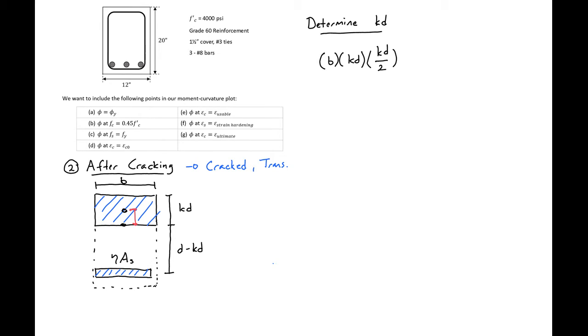Then set this equal to everything, or the areas times distance below. We'll have our area of n times As and then times d minus kd.